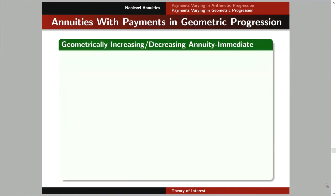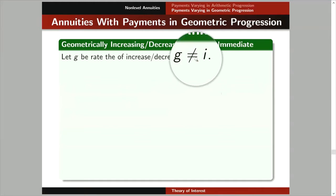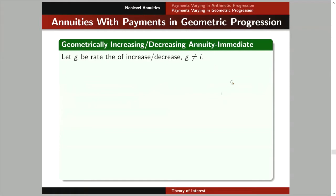Let's have a geometrically increasing or decreasing annuity immediate. Let g be the rate of increase or decrease, where g is not equal to i. Please check the practice exercises I gave you because I gave an example where g is equal to i, so you can see what happens when g equals i.